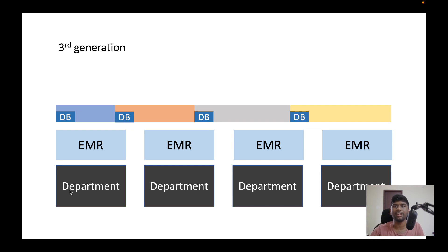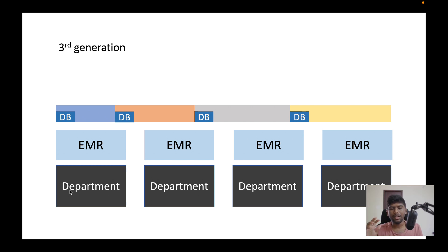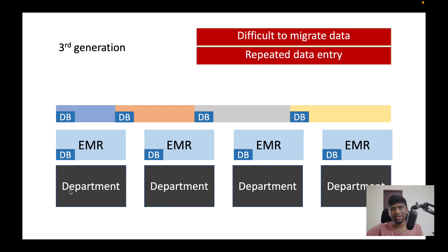Moving to generation 3, hospitals actually start capturing clinical data. Departments and specialties realize that one system can't fulfill all their needs and they need separate modules or separate EHRs for their specialty. For example, an ophthalmology workflow is completely different from an orthopedic workflow. They procure different EHRs — or different modules from the same vendor — but the core problem is that these EHRs store data in their own databases and are all separate standalone applications. I've seen ultrasound machines with a built-in EHR where you have to re-enter all patient history directly into the device — extremely inefficient.